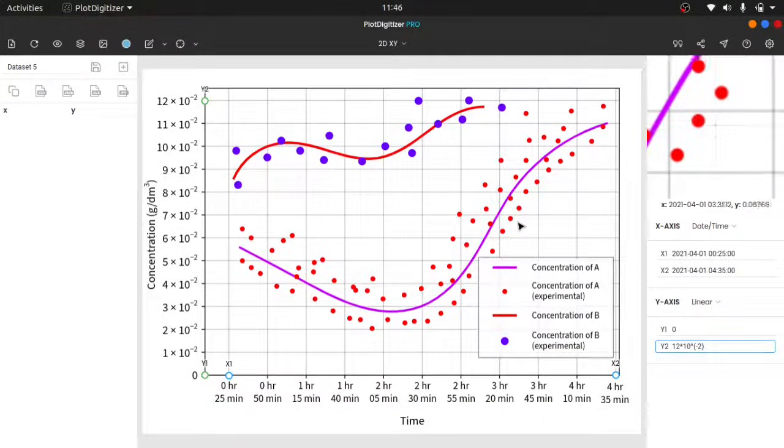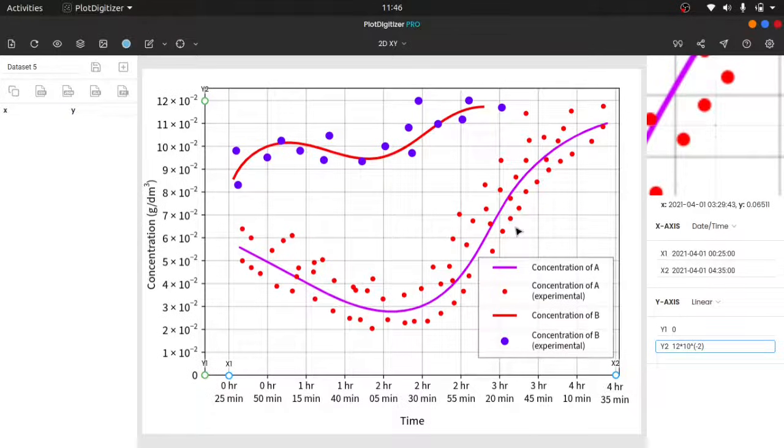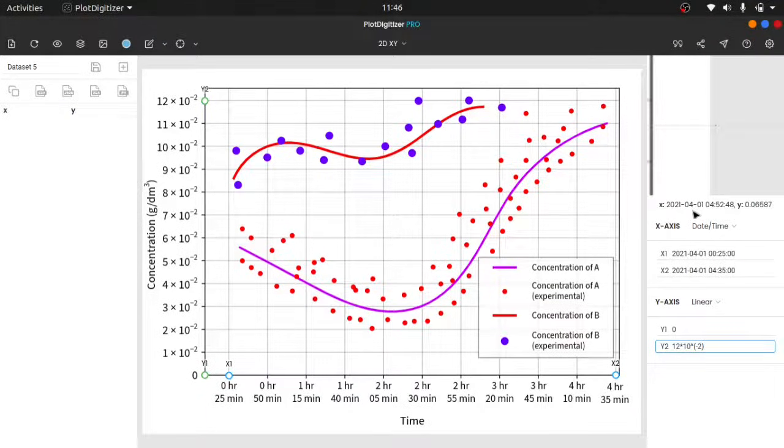Now the graph has been calibrated. You can see the coordinates of the cursor beneath the zoom panel. To make things simple, automatic extraction, or what I call autotracing, can be divided into three simple steps.